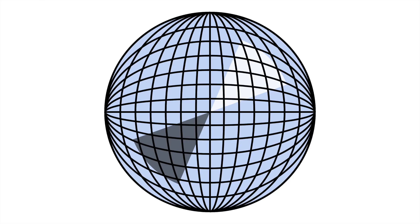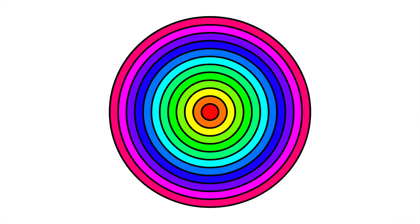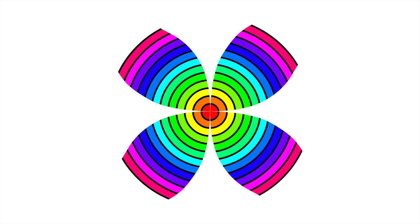A universe with positive curvature would be a hypersphere, a four-dimensional version of a sphere. In a positive curvature universe, parallel lines don't stay parallel — eventually they will come together. This is because as you go outward from a point in a positive curvature universe, there is less space than there should be.